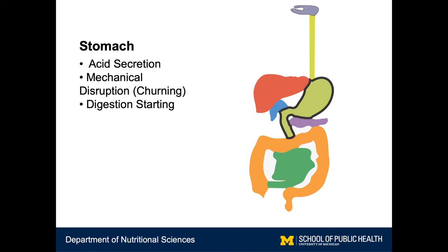The next main organ is the stomach. In the stomach, mechanical disruption occurs, but instead of chewing, now it's by churning, through constriction of the large muscles around the stomach. There's also a large amount of acid secretion, which makes the pH of the liquid much lower. This aids in both the breakdown of the food and also allows for the digestive enzymes, in some cases, to become active. This is where digestion really starts.